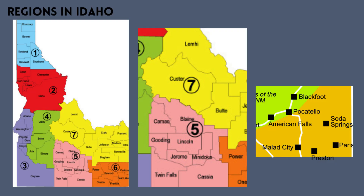Next up is the southeast Region 5, which encompasses Pocatello, Lava Hot Springs, and Montpelier areas. This region has 209 sunny days per year, 14.8 inches of rain per year, 103 days of precipitation per year, an average July high of 84 degrees, an average January low of 17 degrees, and 70 inches of snowfall per year.